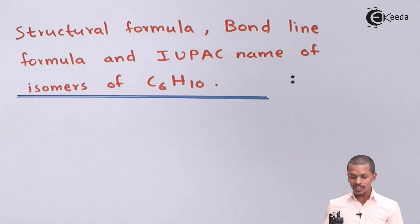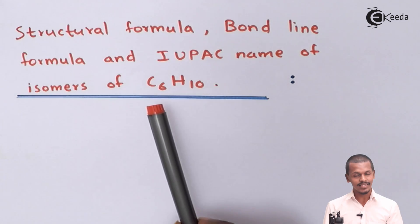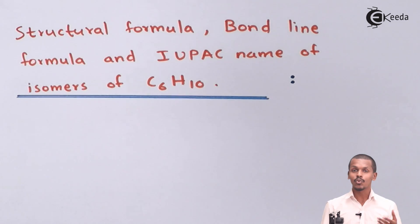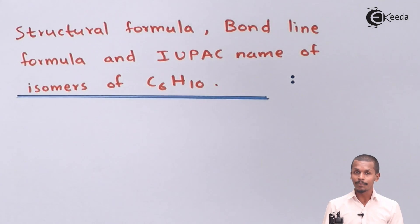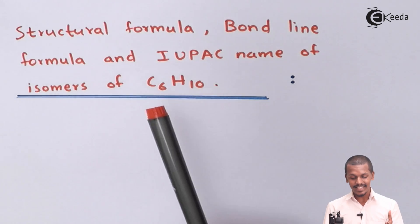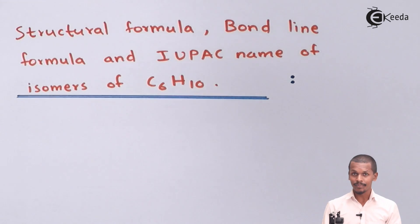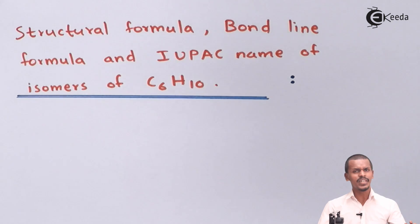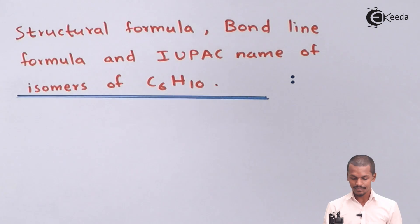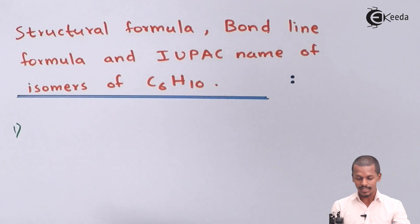If we consider n=6, then 2n equals 12 and 12-2 equals 10, which makes us understand this is an alkyne family. Now let us do the structural formula of the different isomers of C6H10. The first isomer will be a straight chain alkyne, consisting of 6 carbon atoms in a straight chain.